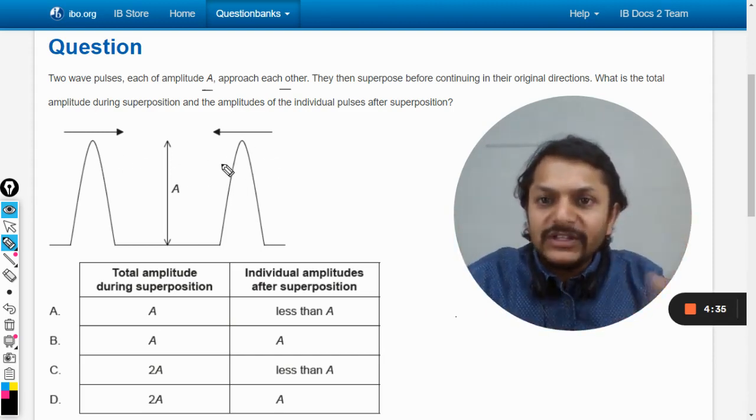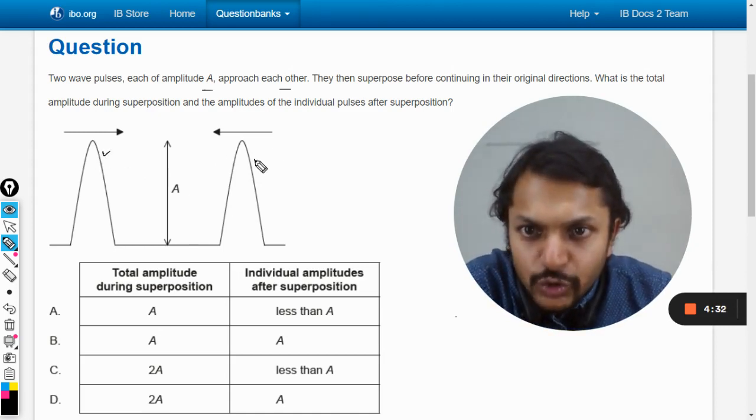So what happens here is this is a pulse, this is another pulse. They are coming in and overlap. Once they overlap, the amplitude here is A and here is also A.